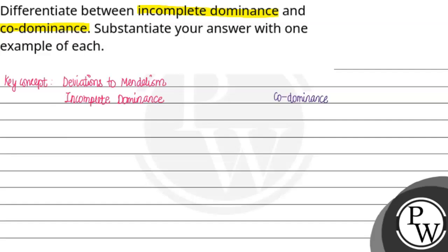Incomplete dominance means the phenotype is intermediate — the phenotype is a blend of the two parental traits.